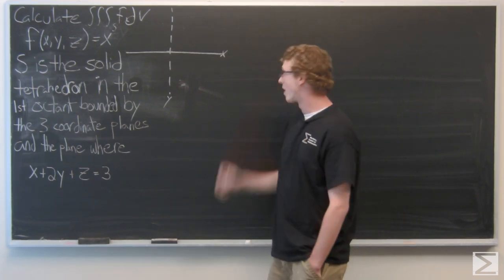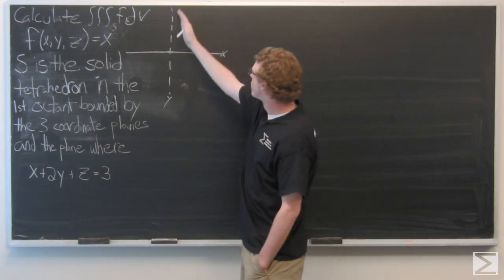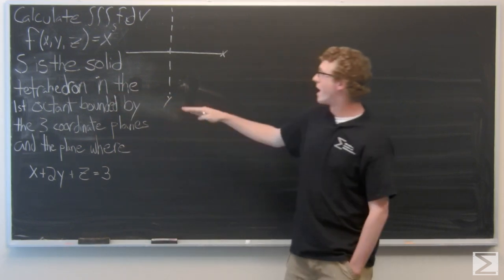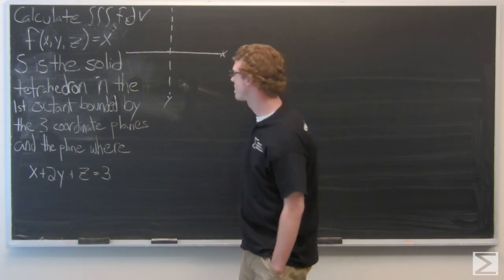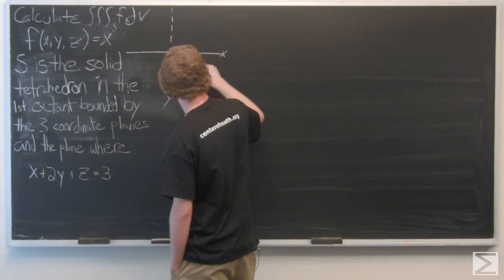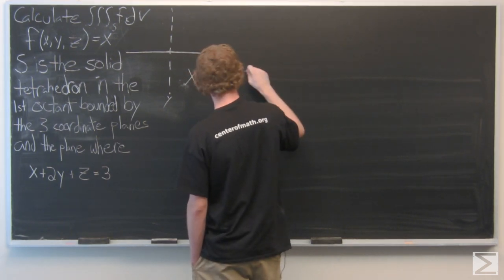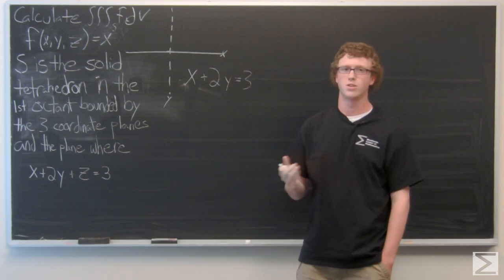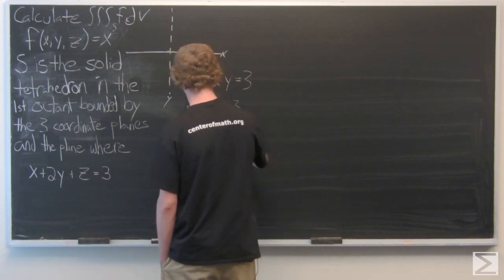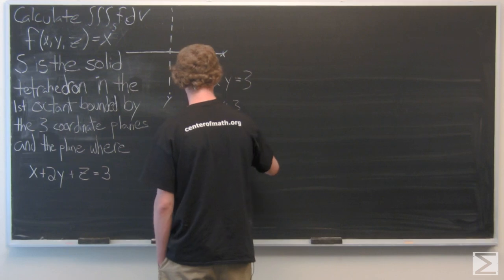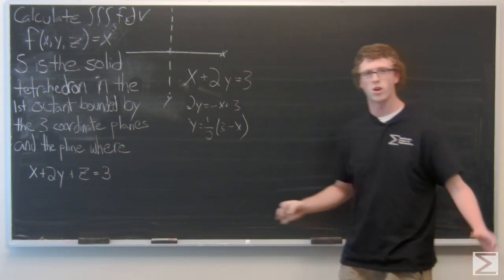In order to project into the x,y plane, we have the x-axis and the y-axis, which are two of our bounds. The tetrahedron is bound in the first octant by the coordinate planes — the dotted line for y, the solid line for x. We set z equal to zero and solve for y, so we get a function of y in the x,y plane.